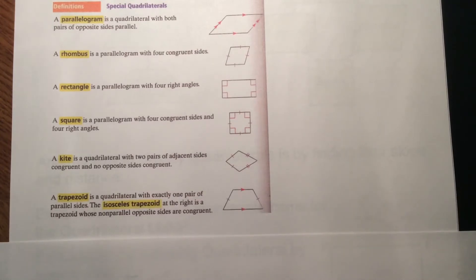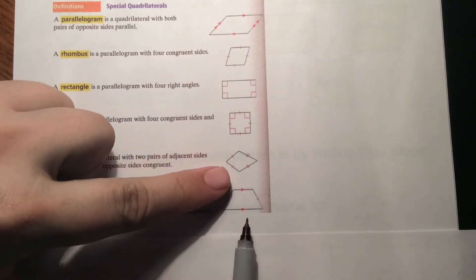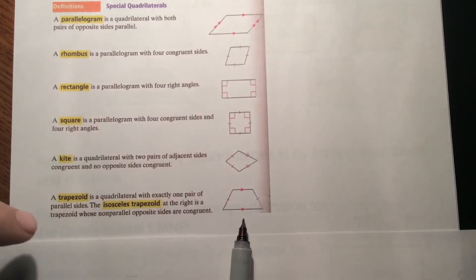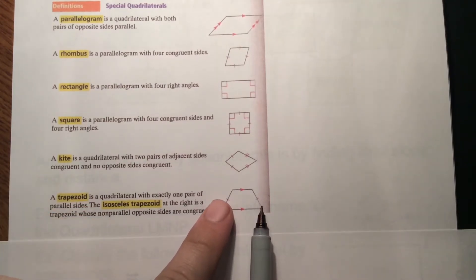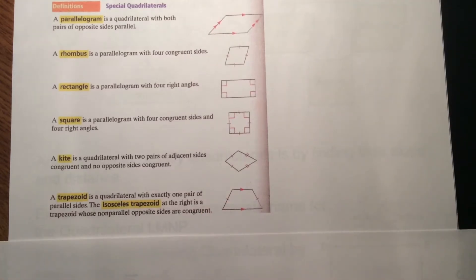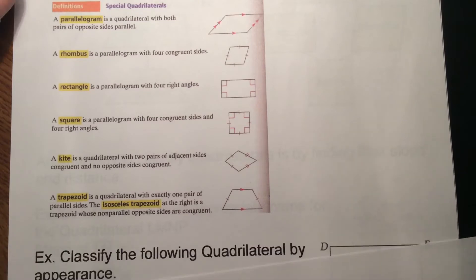Lastly, we have a trapezoid, which is a quadrilateral with only one set of parallel sides — in this case, the top and bottom sides are parallel. If the non-parallel opposite sides are congruent, then it's an isosceles trapezoid, just like an isosceles triangle has two congruent sides. So we can start classifying these figures.